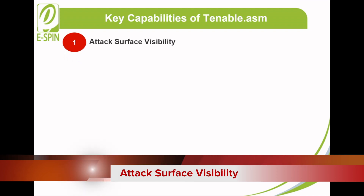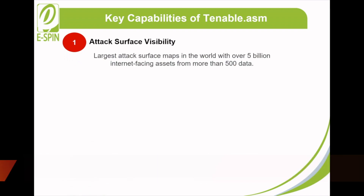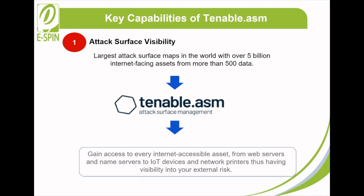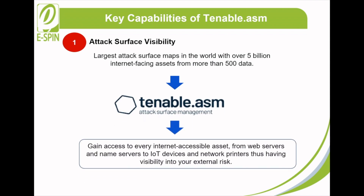Attack surface visibility: with the largest attack surface map in the world — over 5 billion internet-facing assets from more than 500 data sources — Tenable ASM enables you to gain access to every internet-accessible asset, from web servers and SMTP servers to IoT devices and network printers, providing visibility into your external risk.